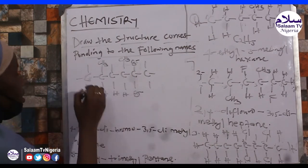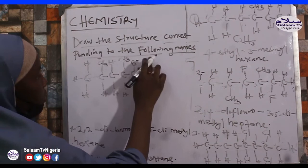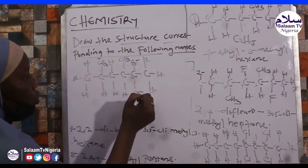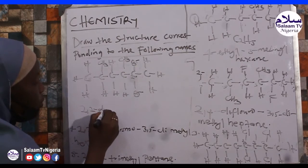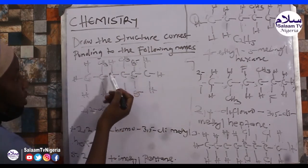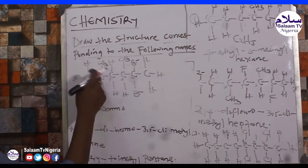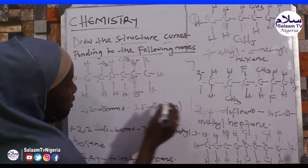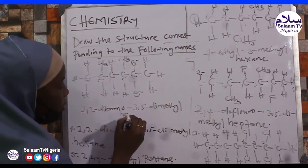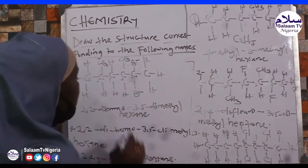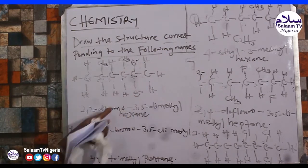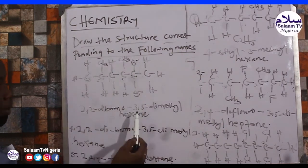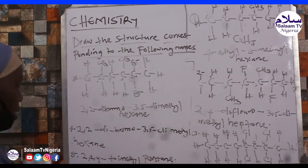The remaining positions are filled with hydrogen. The main carbon chain is hexane 1, 2, 3, 4, 5, 6. At position 2 we have dibromo. At positions 3 and 5 we have dimethyl — 3,5-dimethylhexane. So the full name is 2,2-dibromo-3,5-dimethylhexane.